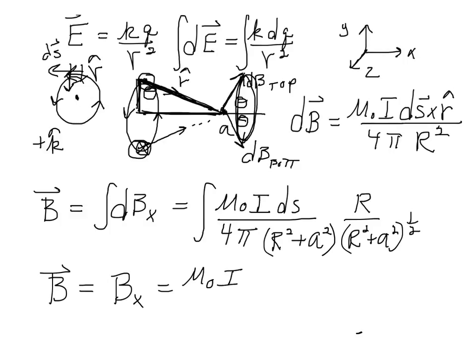We have mu naught i r, all comes out, over 4 pi. I'm going to try and condense this into r squared plus a squared to the 3 halves, all times the integral. The only thing left is the integral around the circle of ds. If we add all the ds's around a circle, what do we get? We get the circumference of a circle. And so that's 2 pi r. So the 2 pi can cancel the 4 pi, leaving a 2.